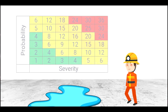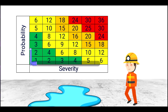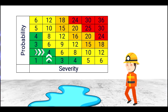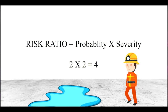Now we need to evaluate the risk using a risk matrix — specifically a 6x6 risk matrix. In the scenario, there is a wet floor with no indication board, so we set the probability as 2. The worker may fall due to the slippery surface, so we set severity or consequence as 2. The risk ratio is probability multiplied by severity: 2 × 2 = 4. This is our potential risk ratio.